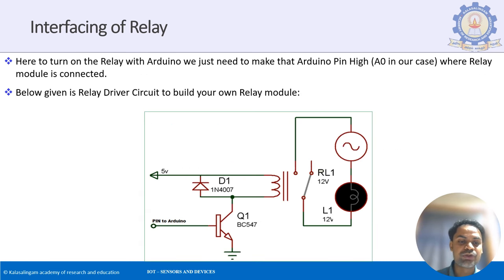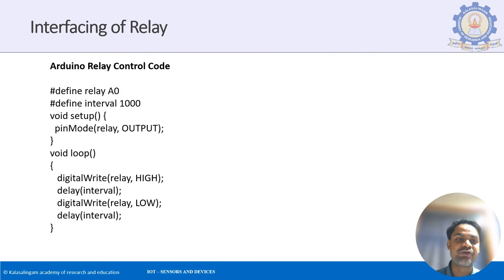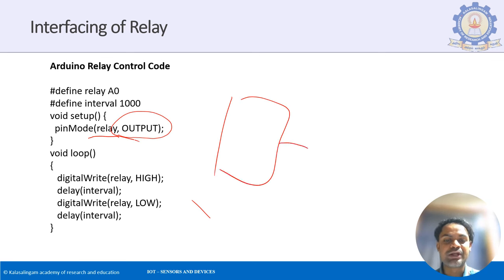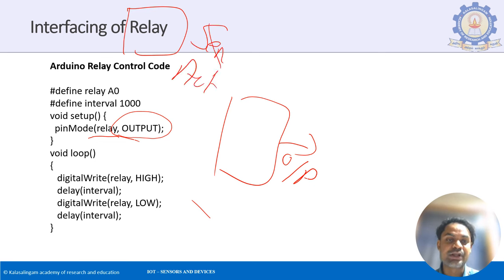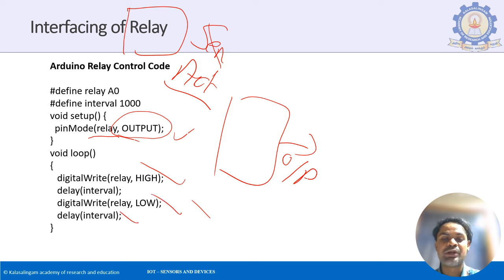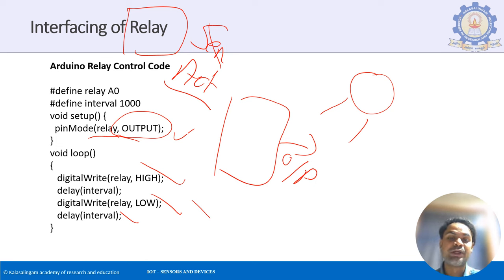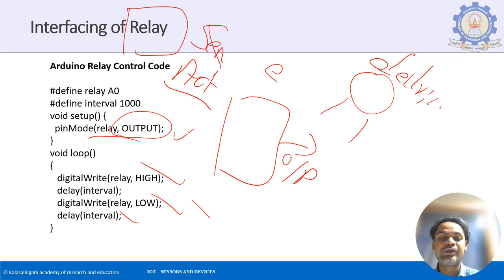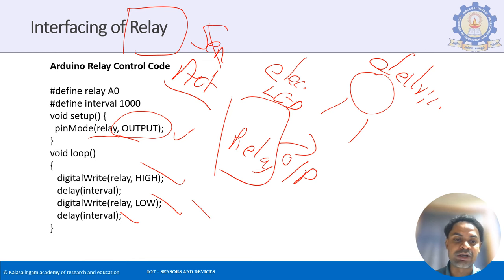Relays come in different channel configurations. A two-channel relay can control two electrical devices. It can work at 5V (for Arduino) or 3.3V (for ESP8266/ESP32 NodeMCU). You can also have eight-channel relays to control eight electrical devices. The electronic side has supply, input 1, input 2, and ground pins; the AC side has normally open, normally closed, and common pins.